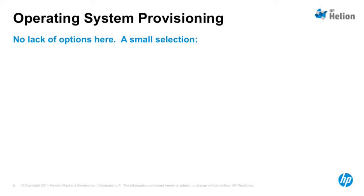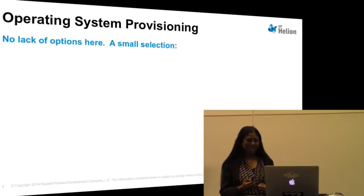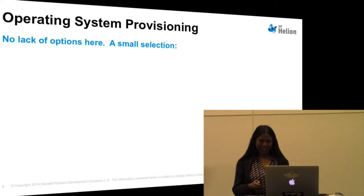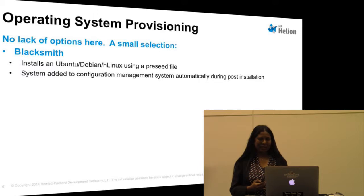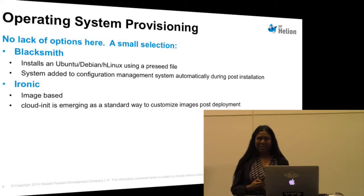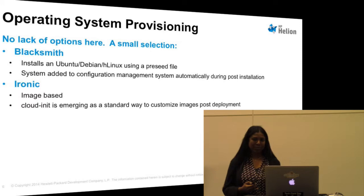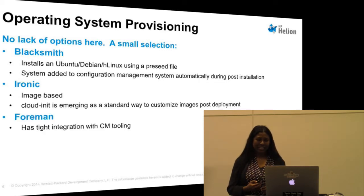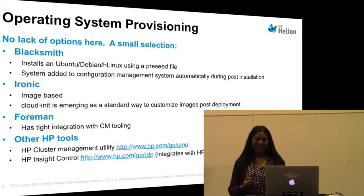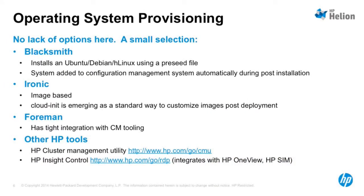Moving on to the next step: you've got your hardware prepped with firmware, RAID, and BIOS configured, and now it's on to configuring your base OS. The list of options is pretty huge, and I'm just going to present a small selection. Blacksmith has functionality to put in any Debian derivative as a base Linux OS, and it also integrates the node with configuration management after the base OS is installed. Then there's Ironic, which is image-based, and CloudInit functionality is emerging as a really cool way to customize images post-deployment — Ironic is used in conjunction with Triple-O in most use cases. There's also Foreman, which has a nice integration with configuration management tooling. You will need at least one tool in this category.